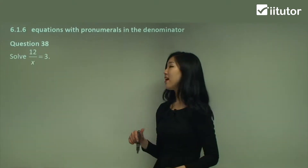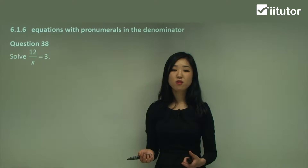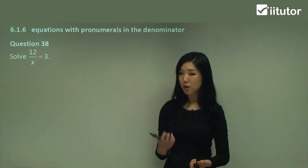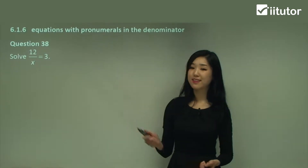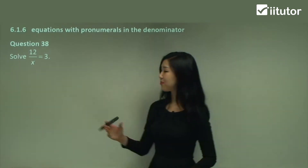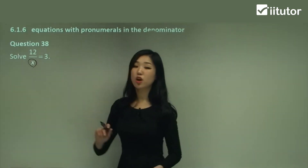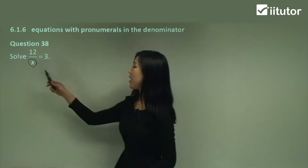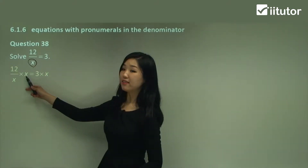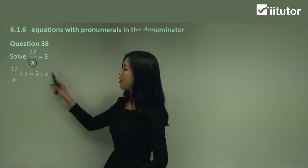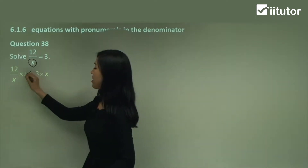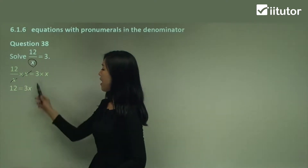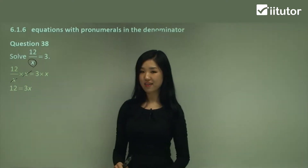Starting with question 38. All you need to do is first identify the denominator. So what's the denominator here? It's x. So just multiply everything by x — multiply 12x by x, 12 over x by x, and 3 by x. Because now we know that we can cancel this out. So we just have 12 left on this side and 3x left on this side.